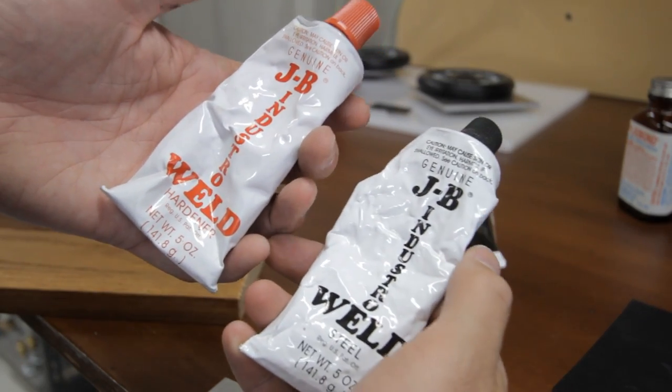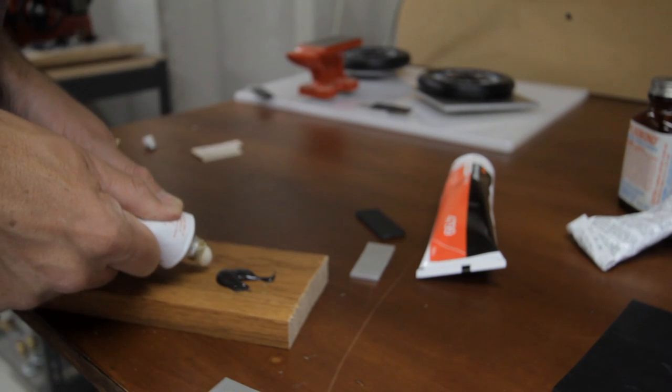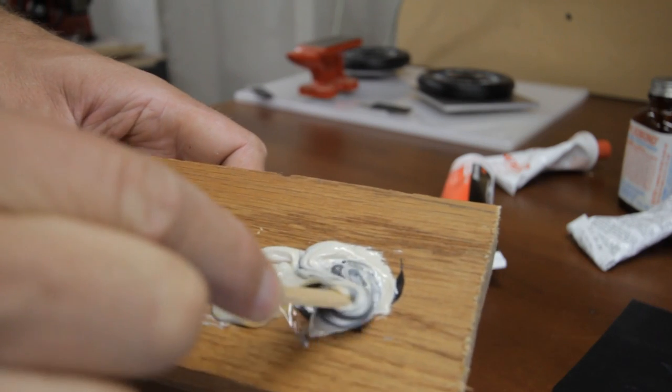JB Weld is a great general purpose epoxy. Epoxies are a two part glue that must be mixed, and the chemical reaction hardens the glue.